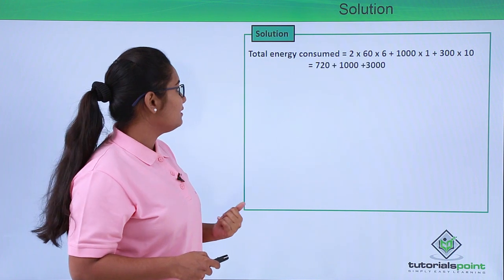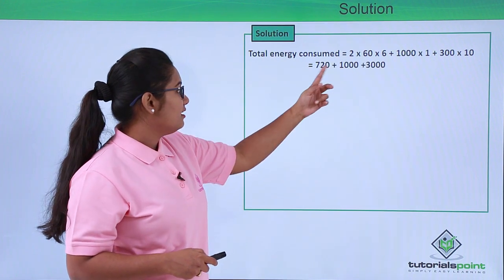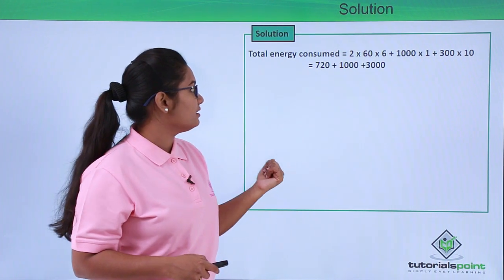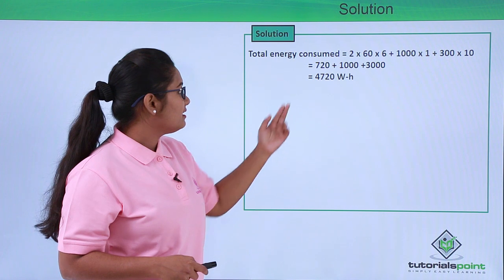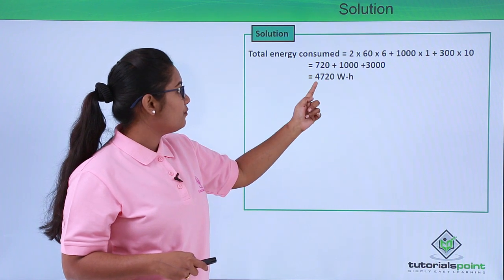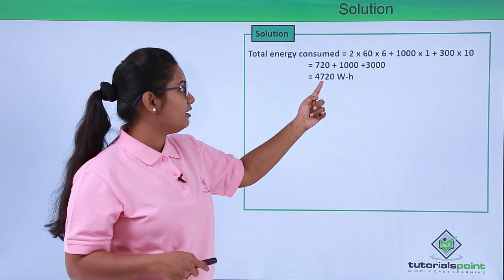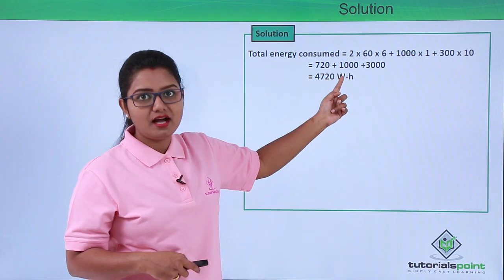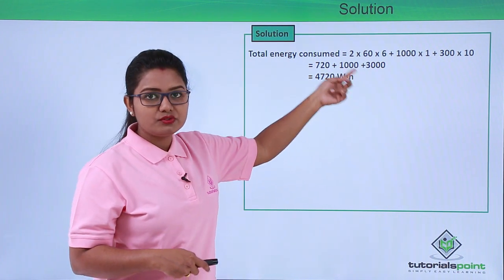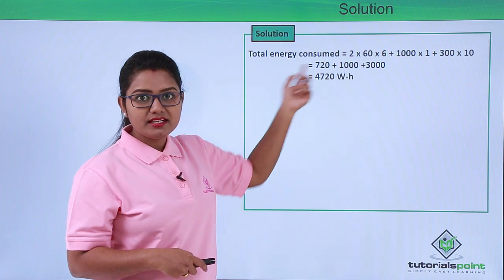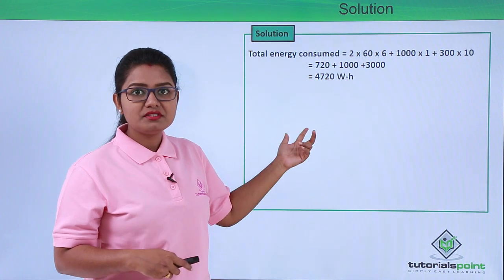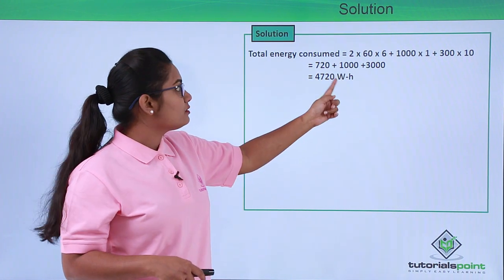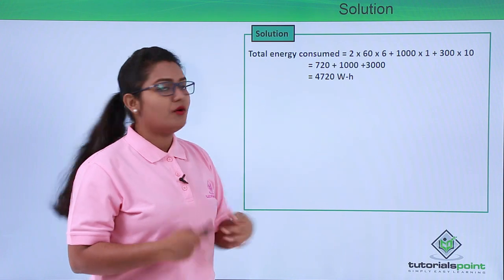Evaluating this expression, we have 720 + 1000 + 3000, which turns out to be 4720 watt-hours. This is the total energy consumed in the household.